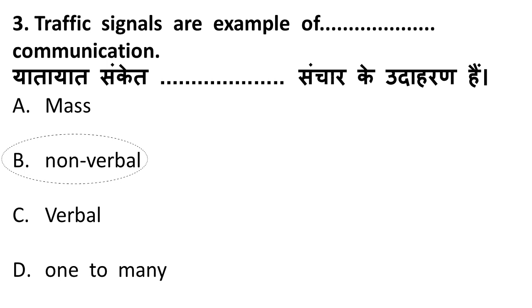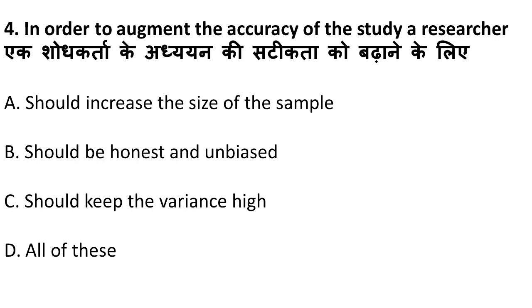Next question: in order to augment the accuracy of a study, a researcher should do what? Option A: increase the size of the sample — correct, bigger sample size means bigger accuracy. Option B: be honest and unbiased — yes, this is also a prerequisite for accuracy. Option C: keep the variance high — this is also right. So the correct answer is all of these.